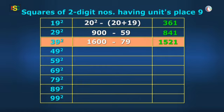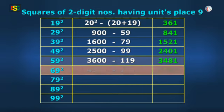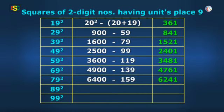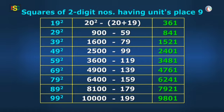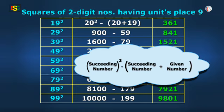And the answer will be 1521. And now I will solve 49 square, 59 square, 69 square, 79 square, and so on. Just like this, as square of any two-digit number ending with 9 is square of succeeding number minus sum of succeeding number and number itself.